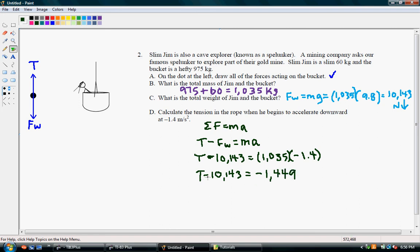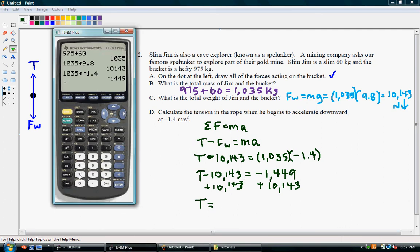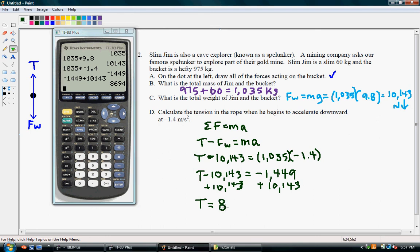So to solve for tension, we're going to add 10,143 to both sides. So our tension equals negative 1,449 plus 10,143. So our tension is equal to 8,694 Newtons up.